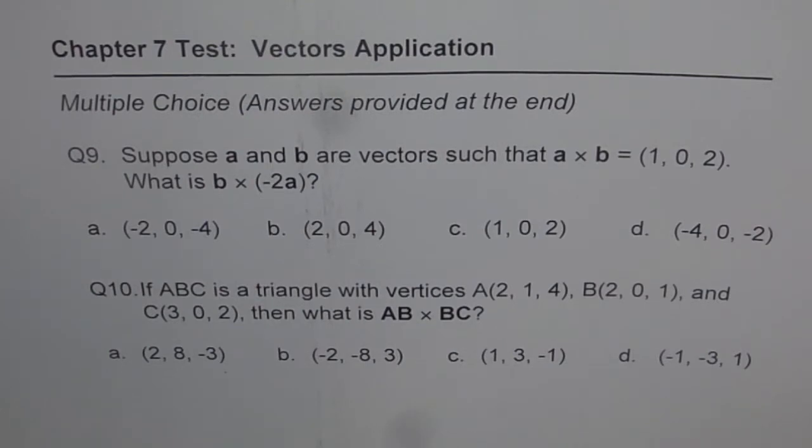Again, you have 4 choices. The first one being (2, 8, -3). Then (-2, -8, 3). C is (1, 3, -1). And choice D is (-1, -3, 1).